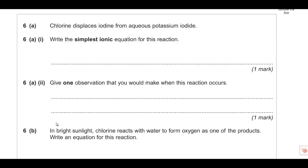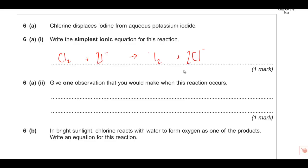Question 6: chlorine displaces iodine from aqueous potassium iodide. The simplest ionic equation is Cl2 + 2I- → I2 + 2Cl-. One observation when this reaction occurs: the solution turns brown/red-brown as iodine is produced.